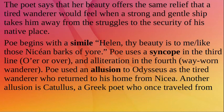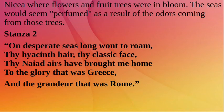Poe begins with a simile: "Helen, thy beauty is to me like those Nicaean barks of yore." Poe uses a syncope in the third line — "o'er" for "over" — and alliteration in the fourth: "way-worn wanderer." Poe used an allusion to Odysseus and the tired wanderer who returned to his home from Nicaea. Another allusion is to Catullus, a Greek poet who once travelled from Nicaea where flowers and fruit trees were in bloom, with the seas seeming perfumed as a result of the odors coming from those trees.